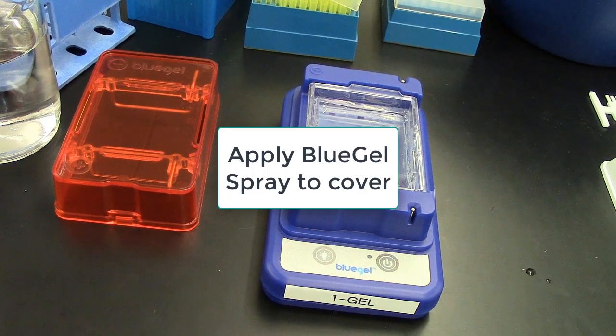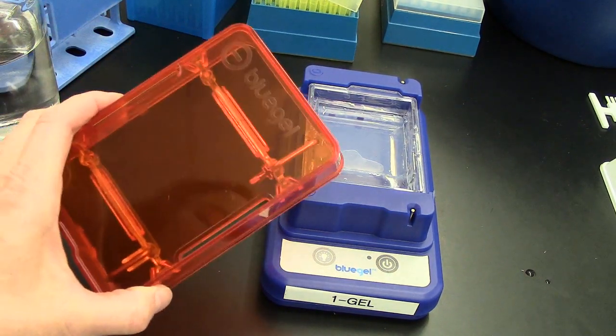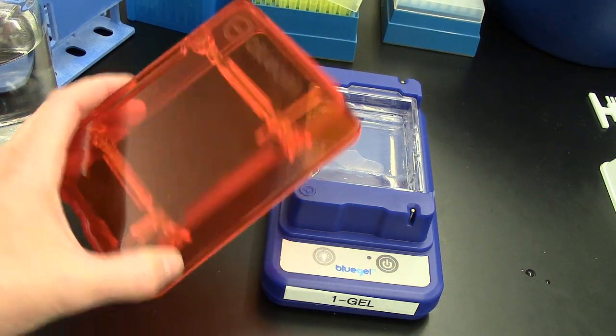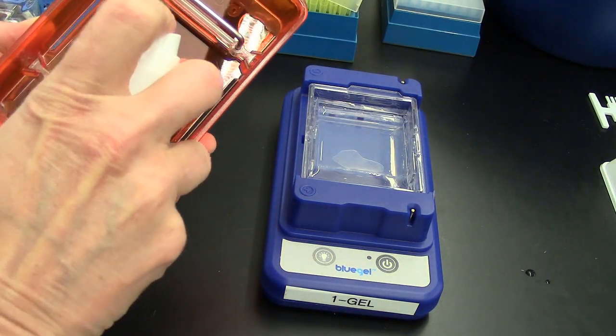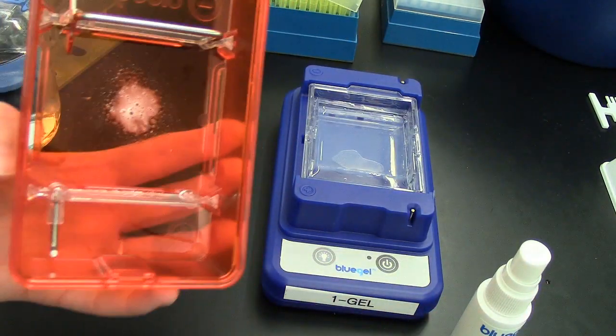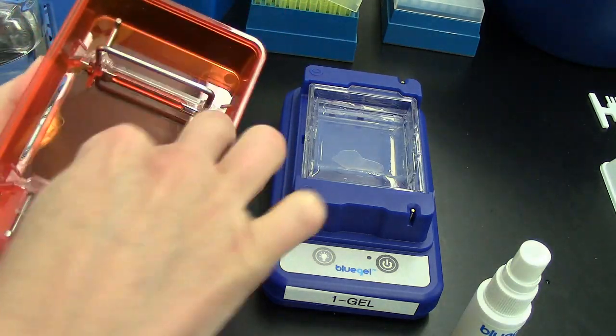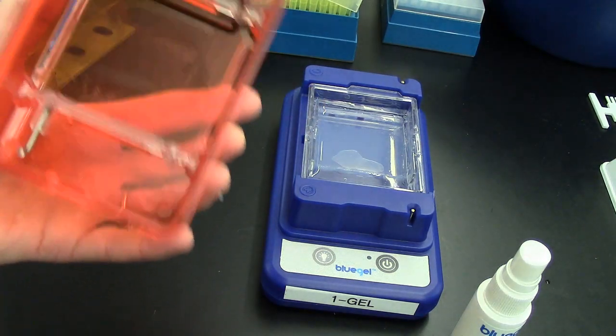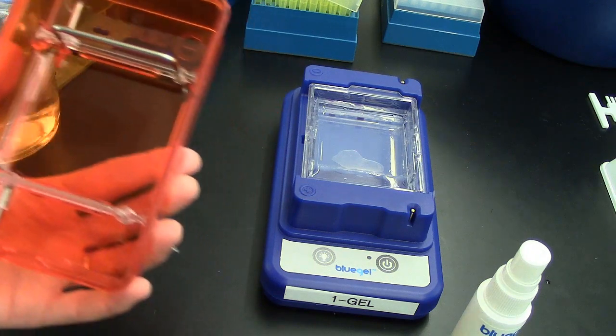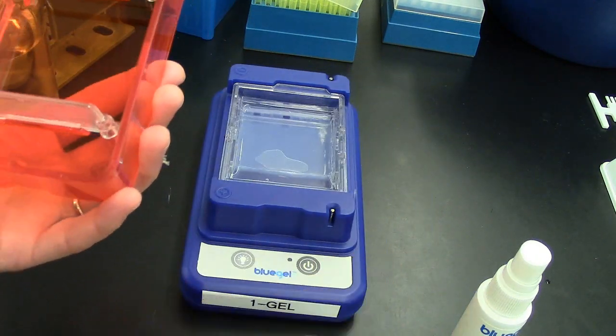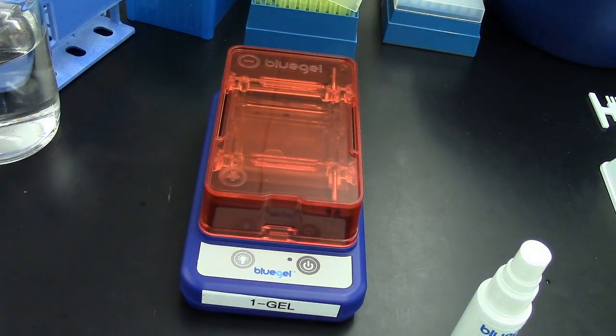To do the final assembly on the electrophoresis chamber, take the cover and reduce the amount of condensation that will occur during the run by taking this blue gel spray and putting one spray between those two electrodes. Take your blue cloth and rub it so it equally spreads on there. Then cover your gel with the cap.